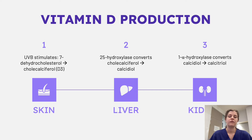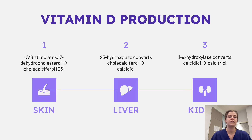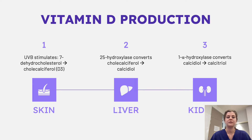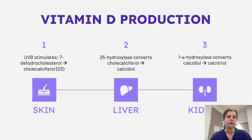Before we think about the etiology, it's good to think about where vitamin D is produced. In the skin, UVB stimulates conversion of cholesterol esters into cholecalciferol or vitamin D3. It then travels through the bloodstream to the liver, where 25-hydroxylase converts cholecalciferol to calcidiol. Finally, it goes through the bloodstream to the kidneys, where 1-alpha-hydroxylase converts calcidiol to calcitriol. A lot of different organs are important in vitamin D production, so there are many steps where things can go wrong.